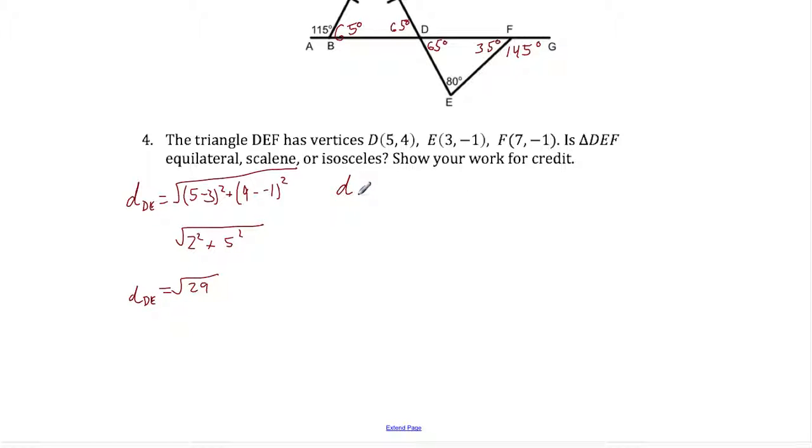We do the distance for side EF which is going to be the square root of 3 minus 7 squared plus negative 1 minus negative 1 squared. Be careful with your signs here. This is going to be negative 4 squared and this is going to be negative 1 plus 1 which is 0 squared. So this is square root of 16, but we know the square root of 16 is 4 so we're going to write it as 4. Side EF is 4.